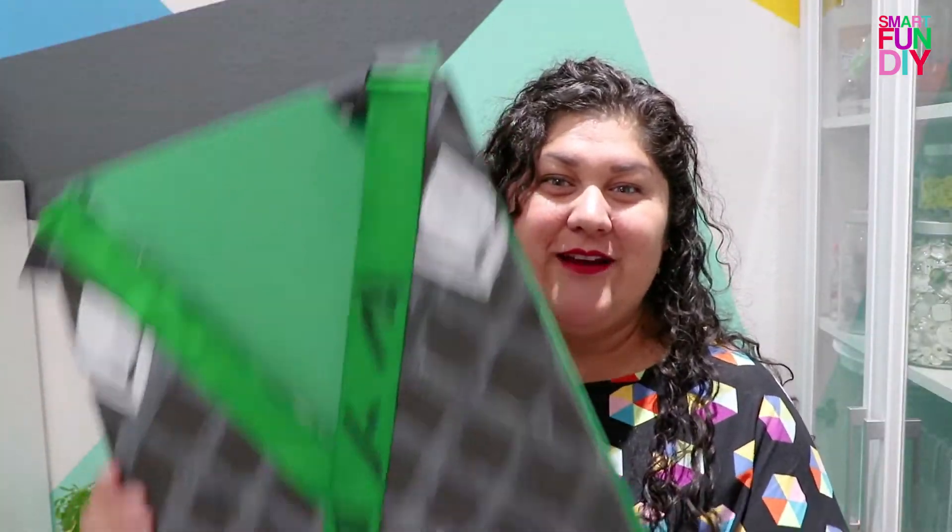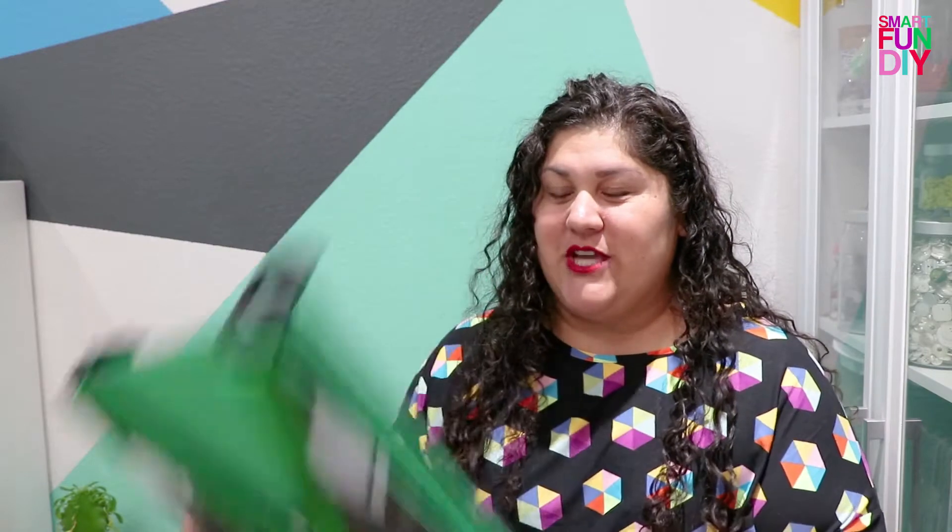What makes this costume super special is it's easy to make, it's a sandwich board style costume, and it's reversible. This first side is the Green Ninja, but you can flip it over and it becomes Lloyd, which is the character who becomes the Green Ninja in the Lego Ninjago movie.